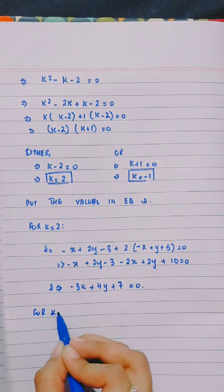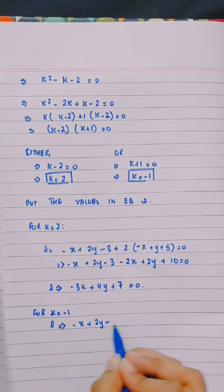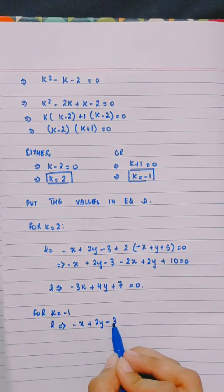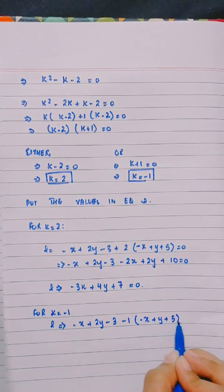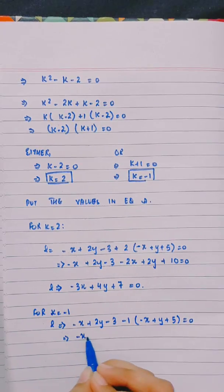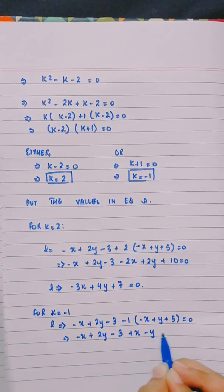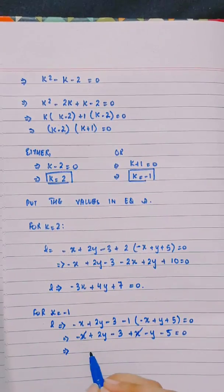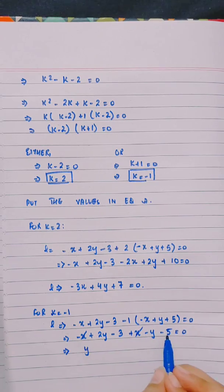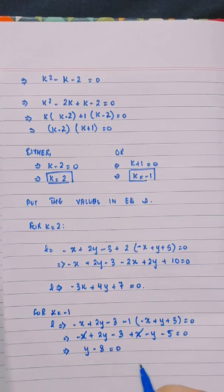Now for k equals minus 1: l equals minus x plus 2y minus 3 minus 1 times (minus x plus y plus 5) equals 0, which gives minus x plus 2y minus 3 plus x minus y minus 5 equals 0. The x terms cancel, leaving y minus 8 equals 0.